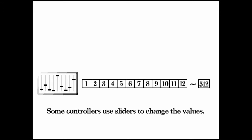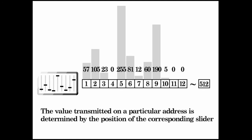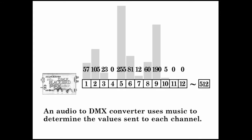Some controllers use sliders to change the values. The value transmitted on a particular address is determined by the position of the corresponding slider. An audio to DMX converter uses music to determine the values sent to each channel.